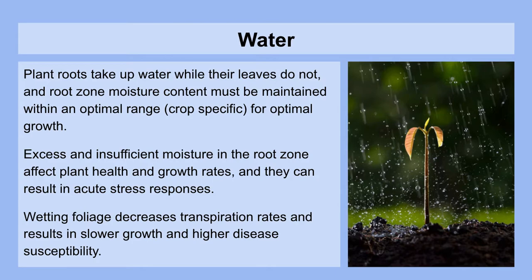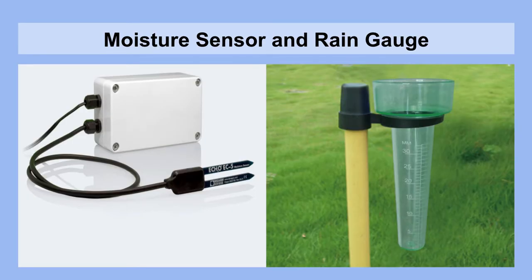Wetting foliage in a rain event, for example, decreases transpirational rates and results in slower growth and higher disease susceptibility, because a lot of microorganisms have an easier time attacking plants when their leaves are wet. Using moisture sensors and rain gauges, you can track how much water is coming from rain and how much needs to be added to the soil or soilless medium for optimal moisture content contributing to healthy growth.